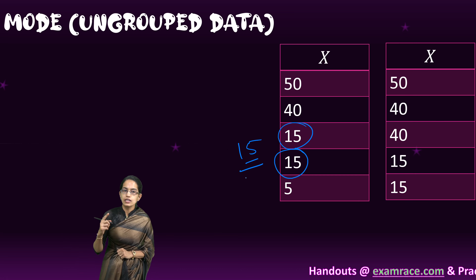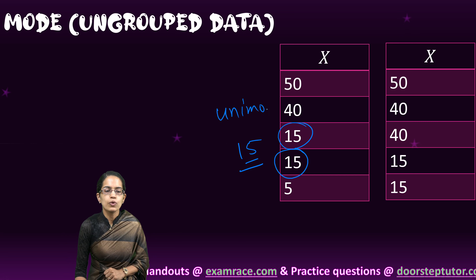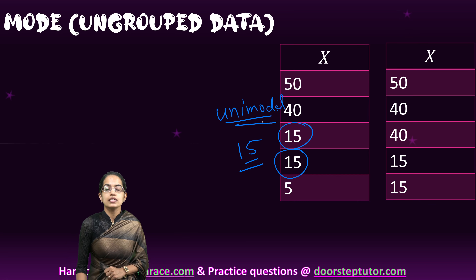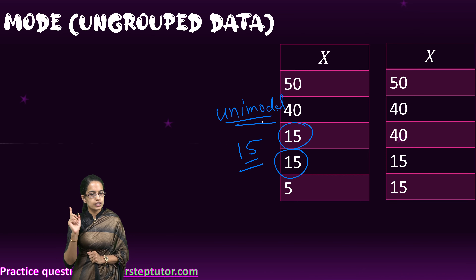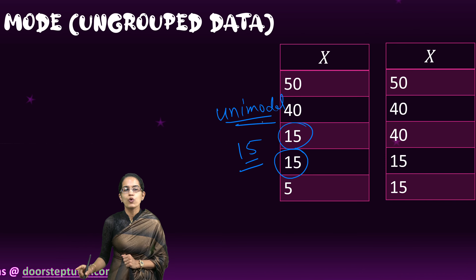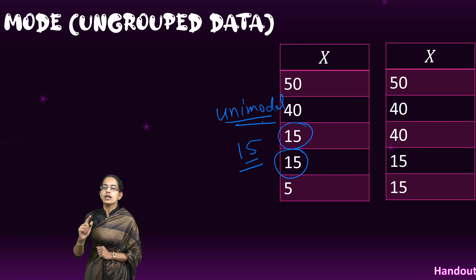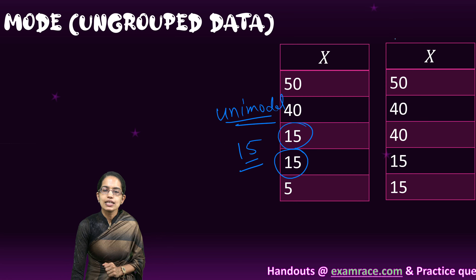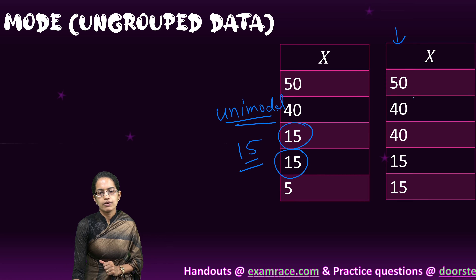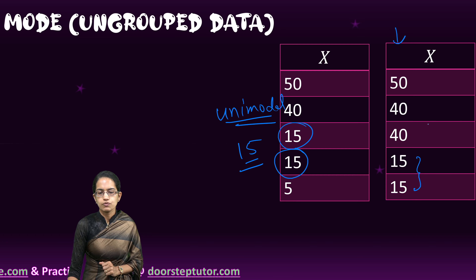In the first case I have five values: 50, 40, 15, 15, and 5. Here 15 occurs twice, so 15 is the mode. There is only one number which is occurring twice, and therefore we call this a unimodal distribution. You have only one mode that occurs twice, and therefore it is unimodal. It can occur thrice, four times, five times, but there is just one value showing a repetitive behavior, so it is unimodal.